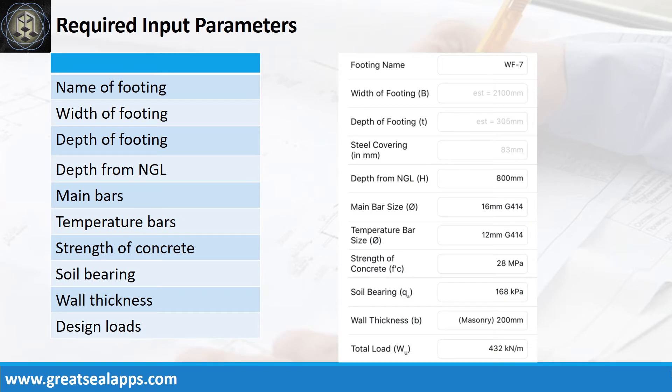Enumerate input parameters required. Name of footing, WF7. Depth from natural grade line, 800mm. Main bars, 16mm bar at grade 414. Temperature bars, 12mm bar at grade 414. Strength of concrete, 28 MPa. Soil bearing capacity, 168kPa. Wall thickness, 200mm masonry wall. And factored uniform load, 432kN per meter.